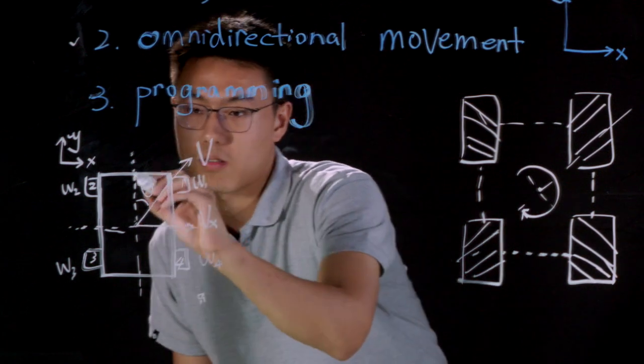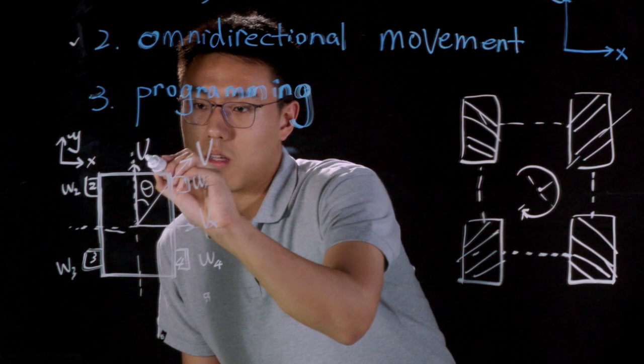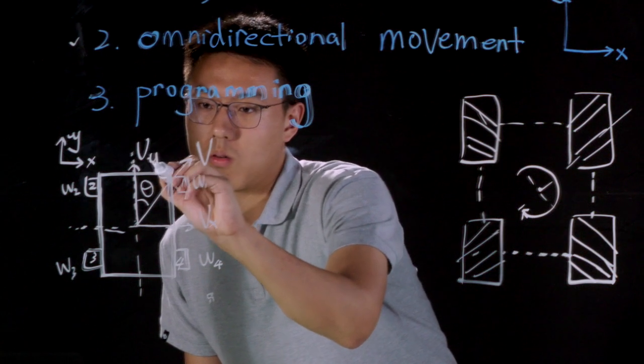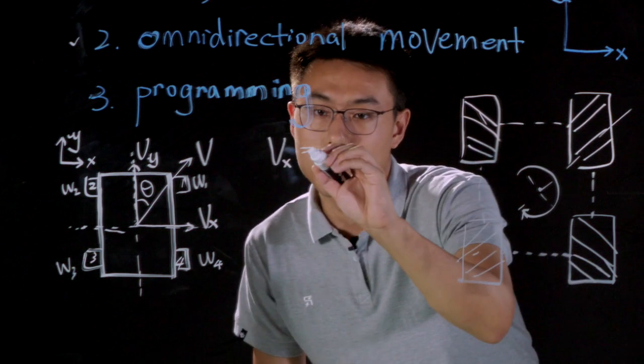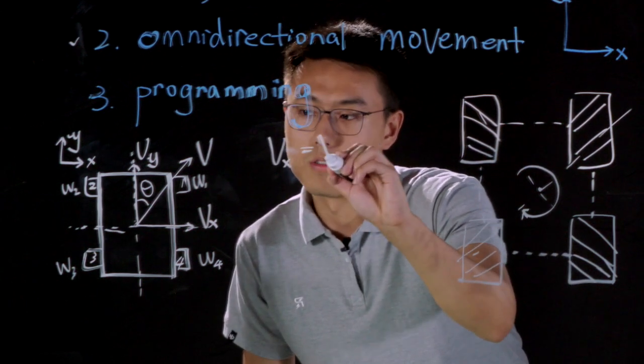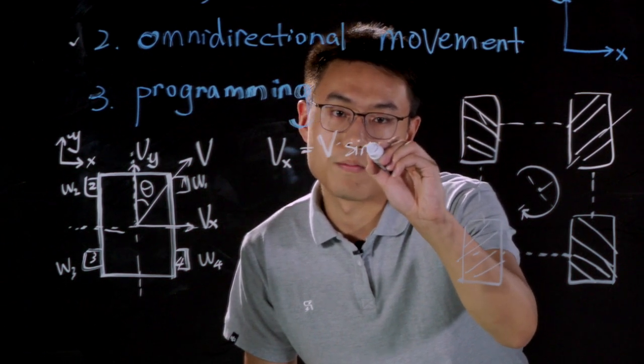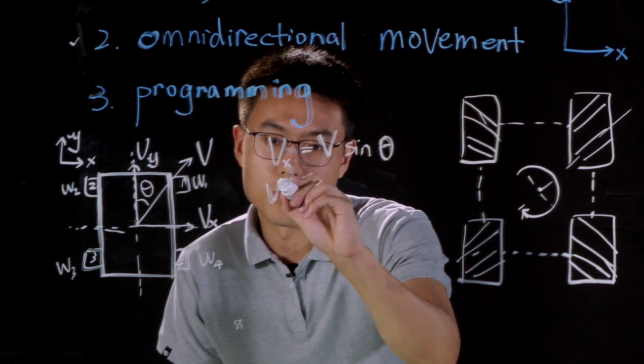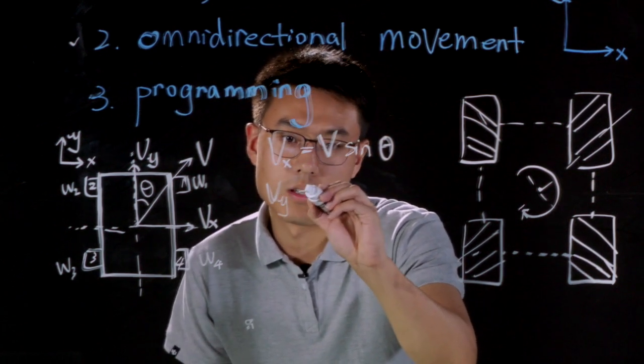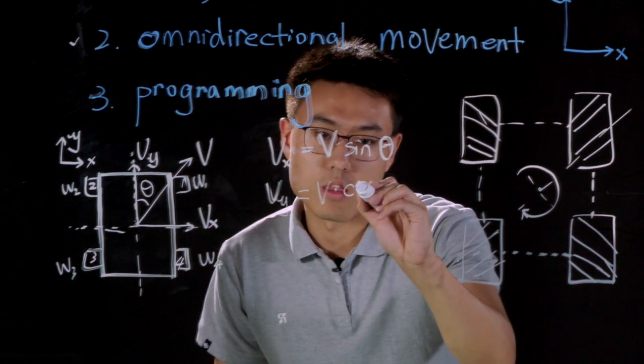This is Vx and this is Vy. So by very simple trigonometry, you can find that Vx equals to V times sine theta. And the component force on Y axis equals to V times cosine theta.